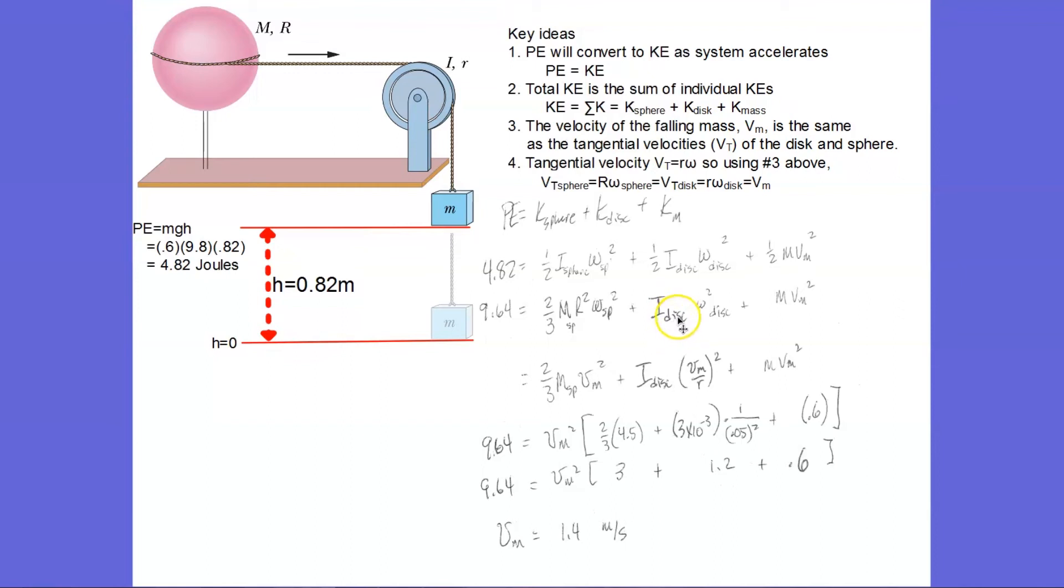But the value of the inertia of the disk is given to me in a number. So I'm just going to leave it as i disk for now. I just got rid of the one-halves. I plugged in my expression for moment of inertia for the sphere.